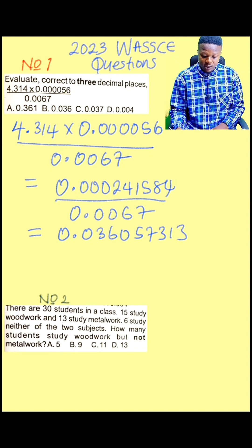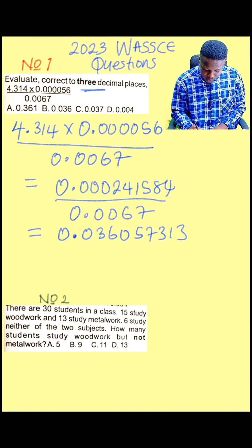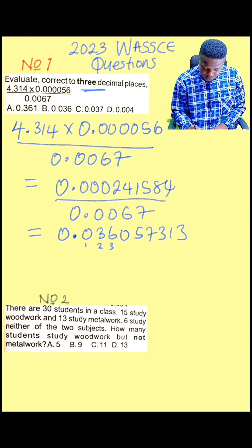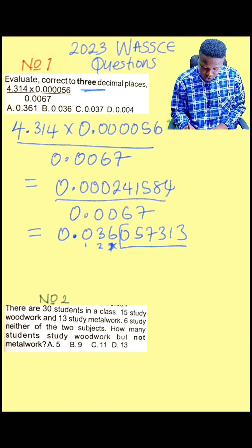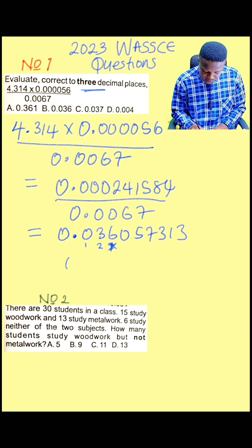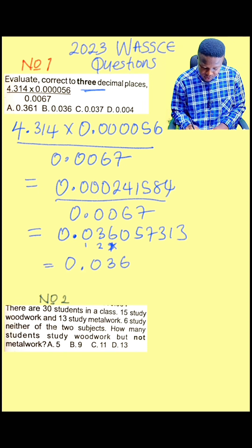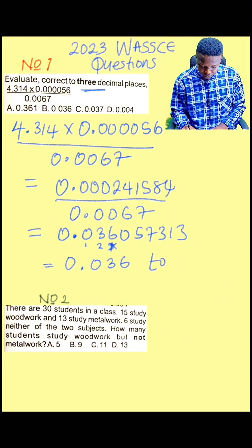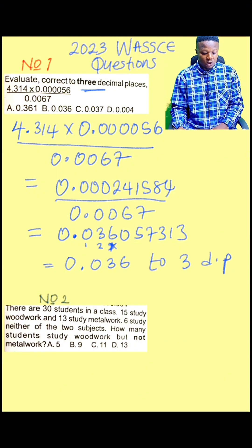But the problem says we should leave our answer to three decimal places. So after the decimal point, you count 1, 2, and 3. You stop here at the third point because this number here, 0, is not up to 5. So our answer will become 0.036 to three decimal places, which is option B.